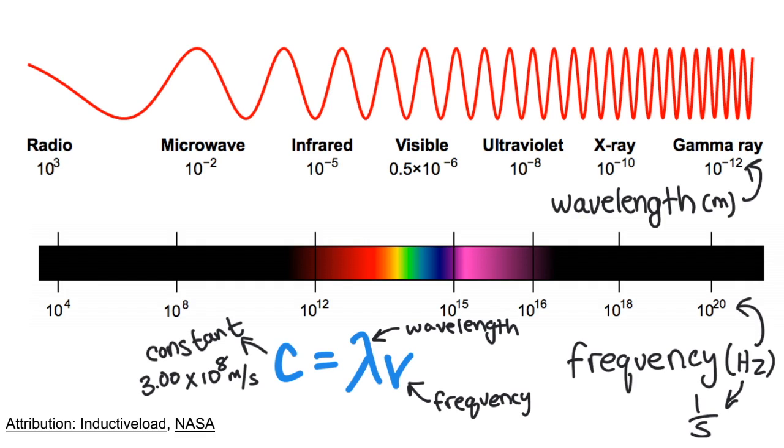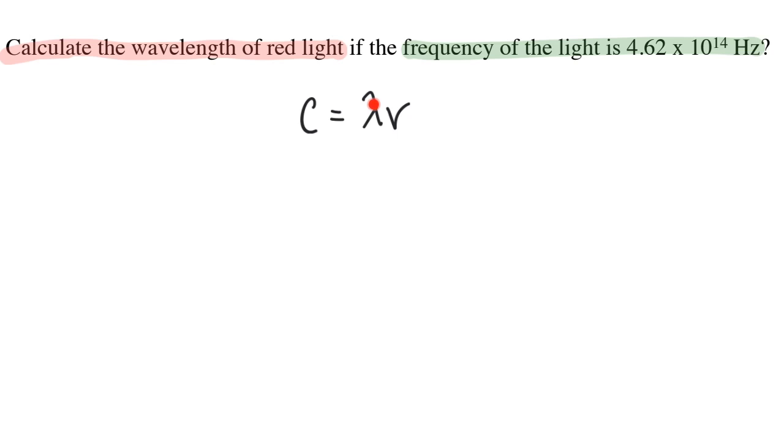Hertz also means the same thing as per second. We're solving for the wavelength. I will divide both sides of the equation by nu. That cancels it on this side and moves it over to the other side.